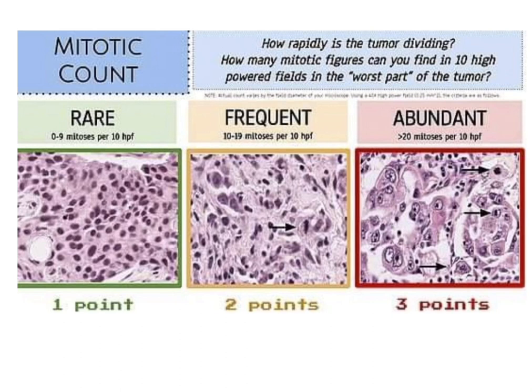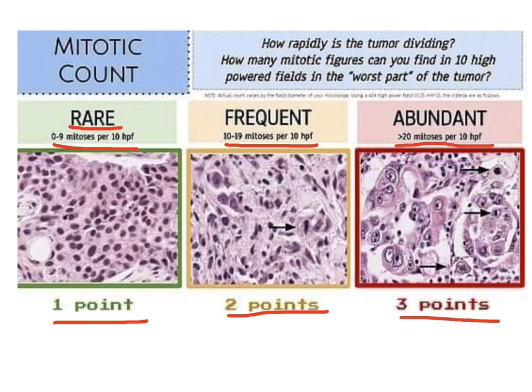This is the pictorial representation of mitotic count. When there are rare mitotic figures — less than 10 per 10 high power field — one point is given. When there are frequent mitoses, 10 to 19 per 10 high power field, two points are given. When there are more than 20 mitoses per 10 high power field, three points are given.